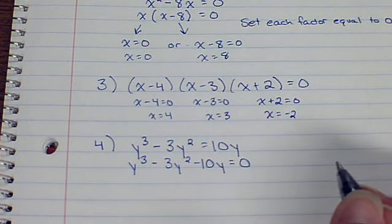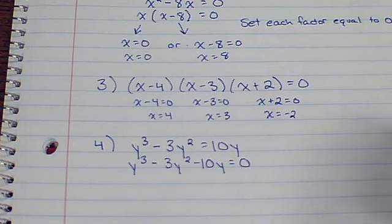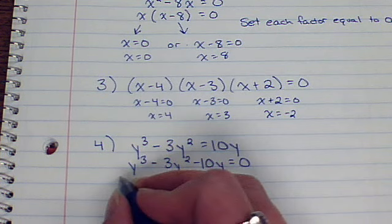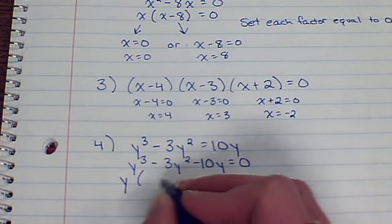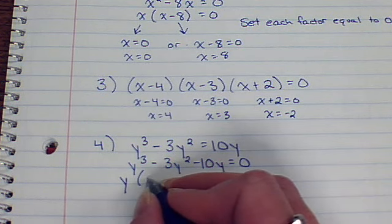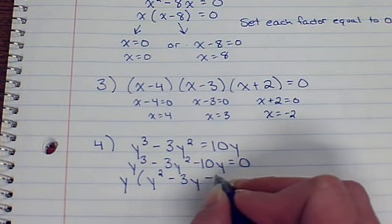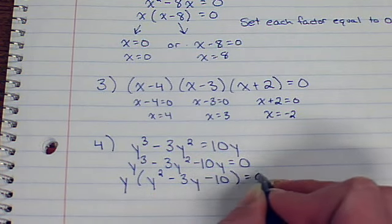All right. Now, we want to factor. Now, remember, you want to look for a GCF first, if you can. I see a GCF. I see a GCF of y. So, if I factor out a y, I'll have y squared minus 3y minus 10 equals 0.